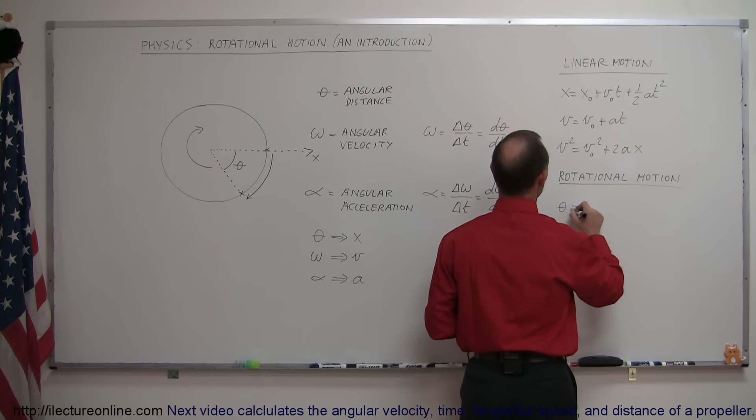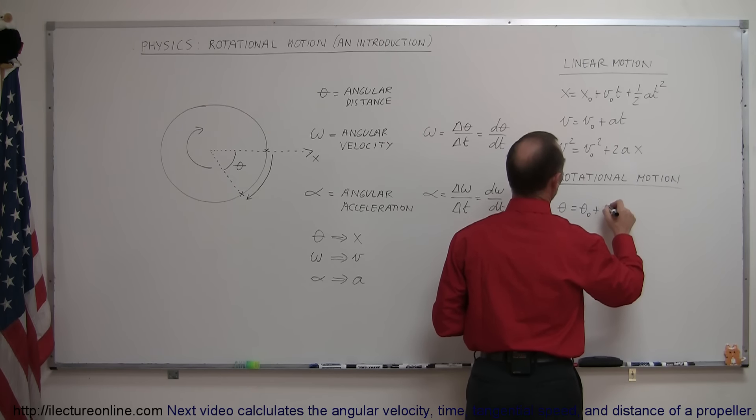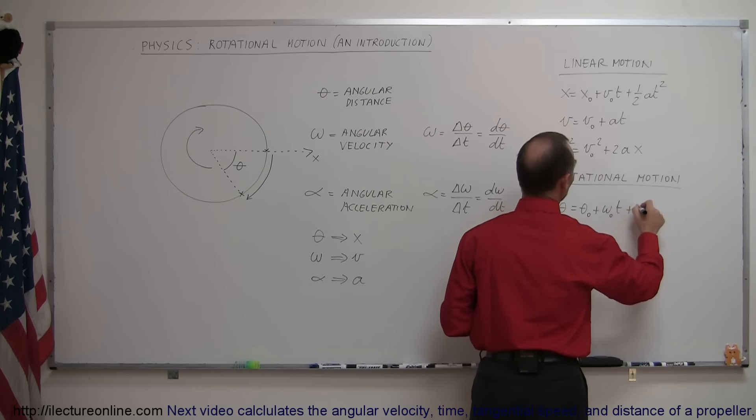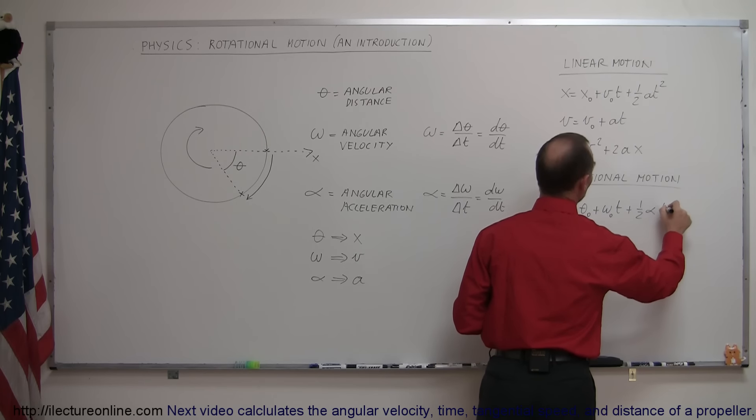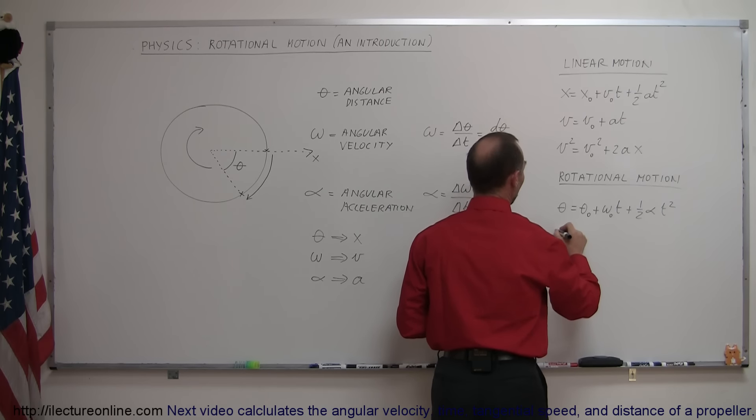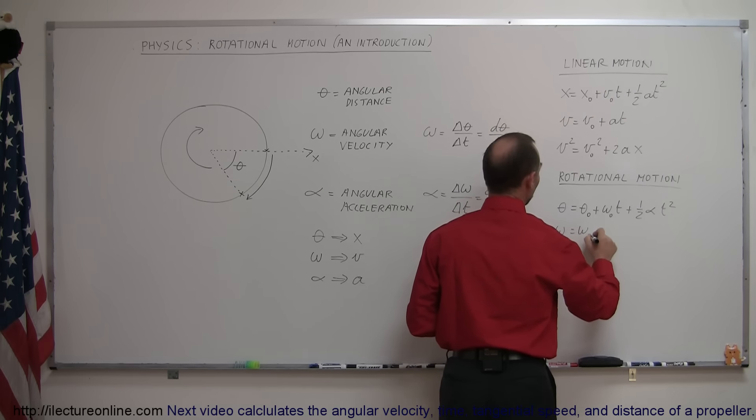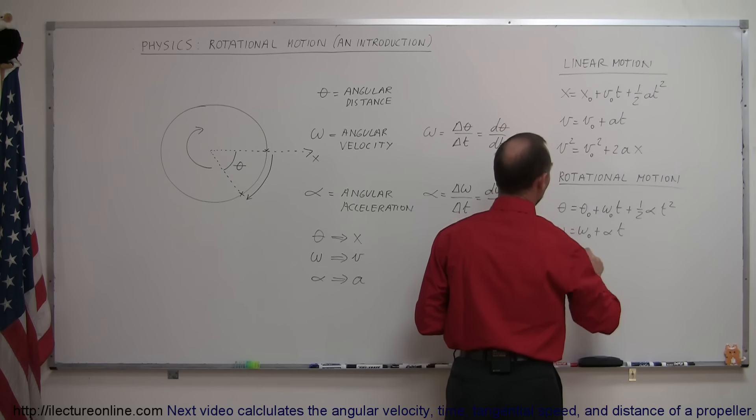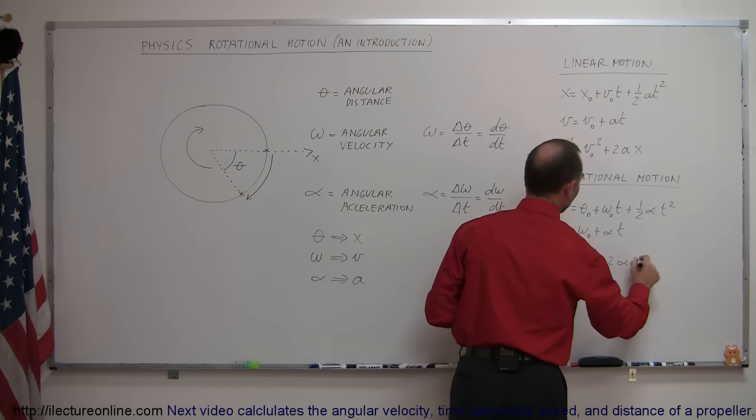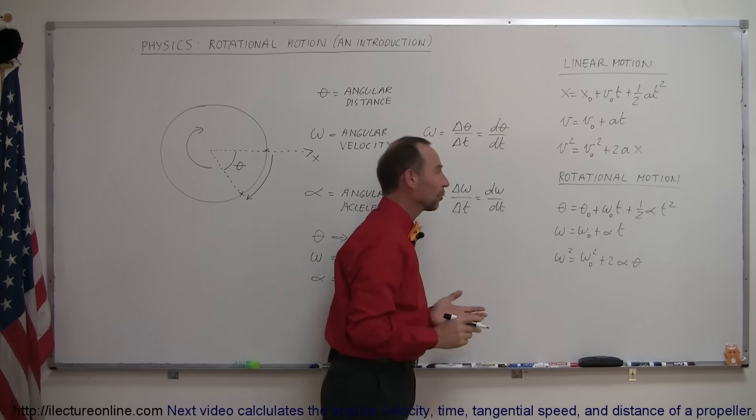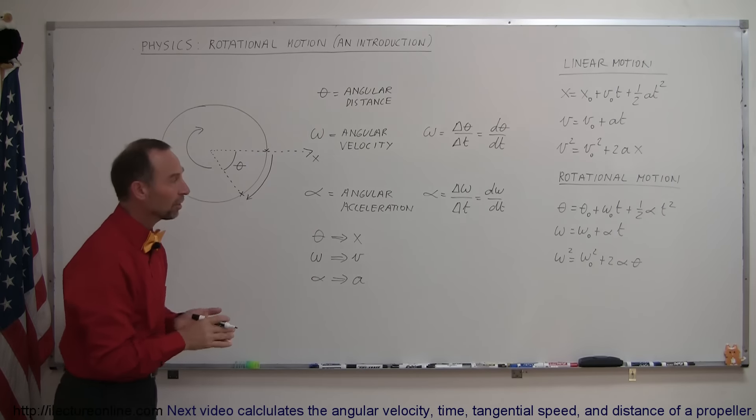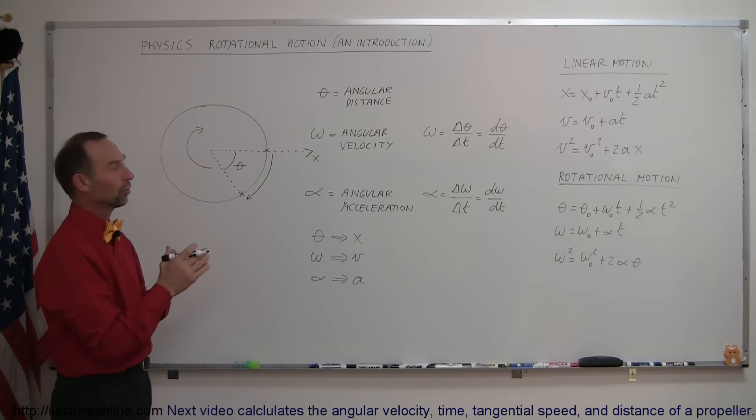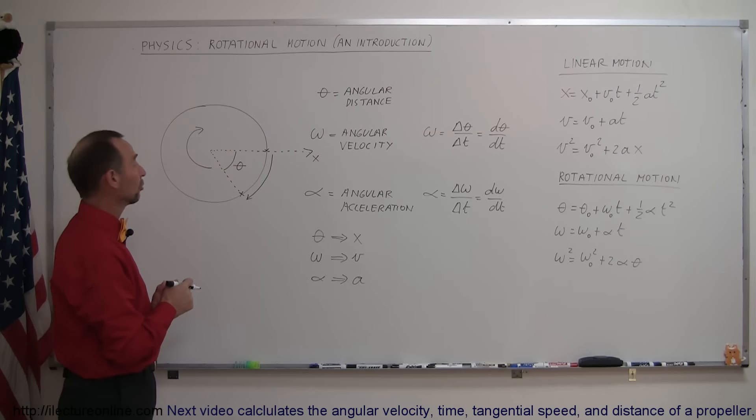That theta is equal to theta sub naught plus omega sub naught times t plus one half alpha t squared. We get omega is equal to omega sub naught plus alpha t, and we get omega squared is equal to omega initial squared plus two alpha theta. And so those are the three equivalent equations for rotational motion, which will do just exactly the same thing for us as the equations of linear motion have for linear motion.